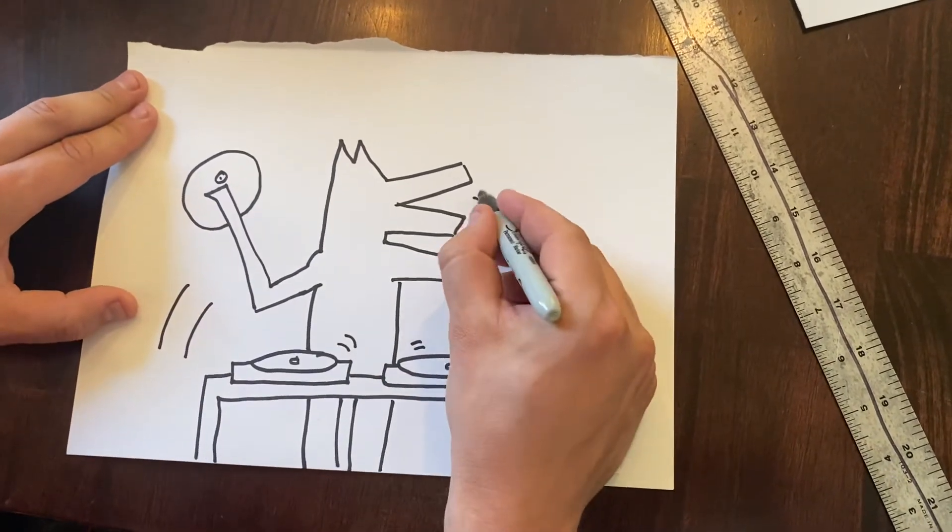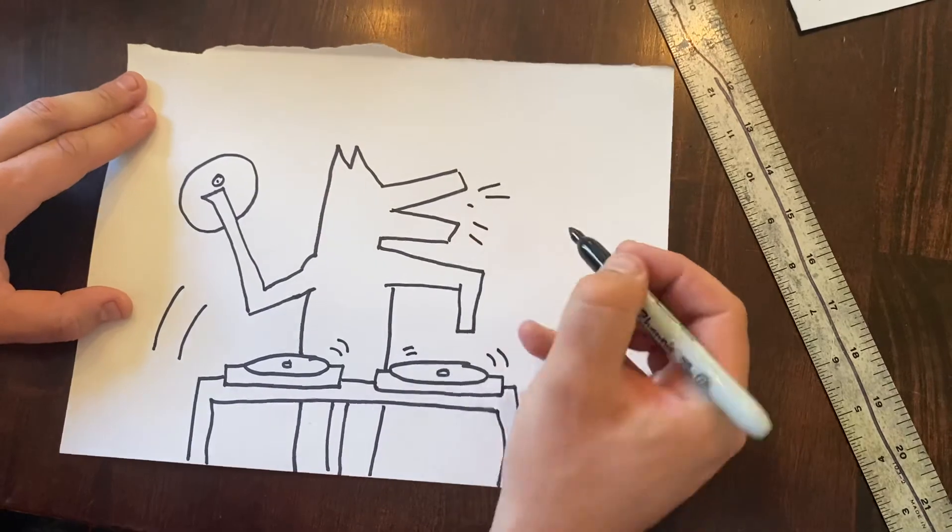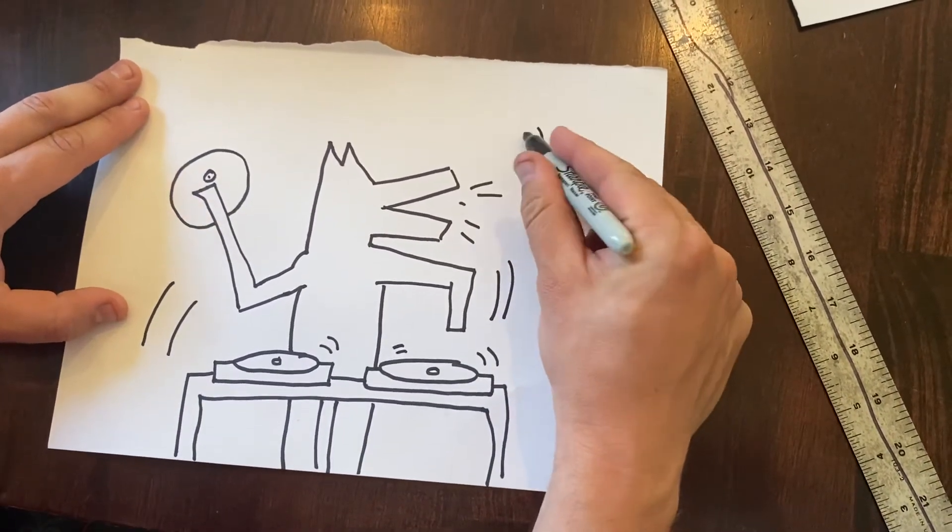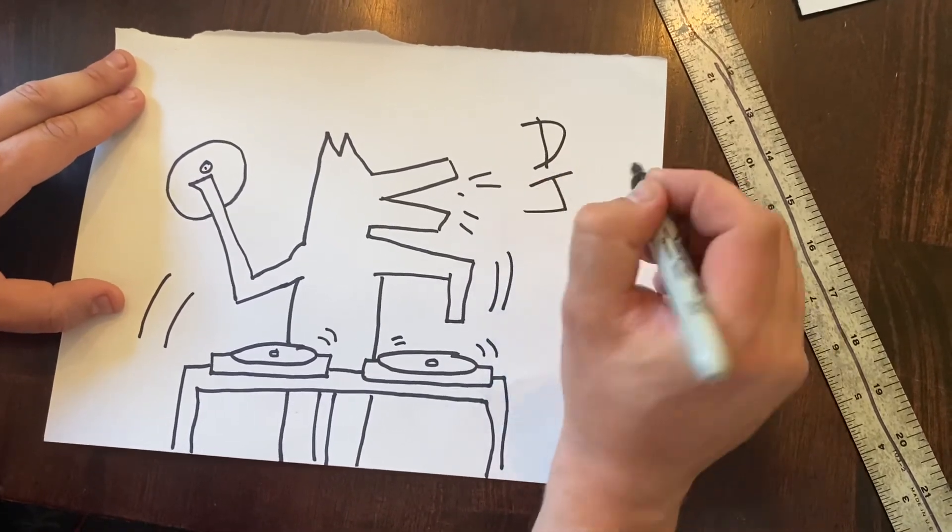There you go. Make some barking noises, barking lines. Throw the DJ up here just like he did.